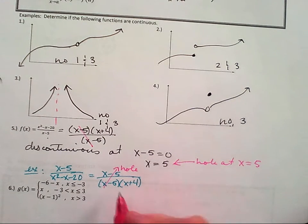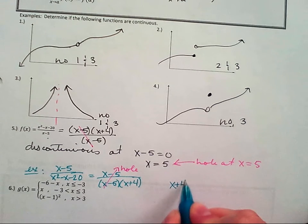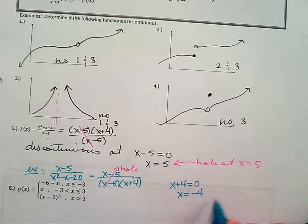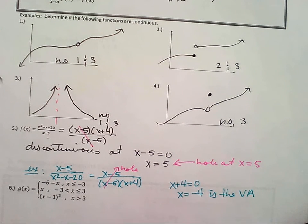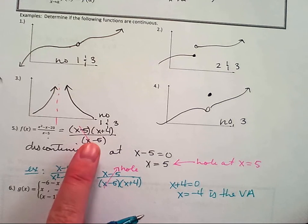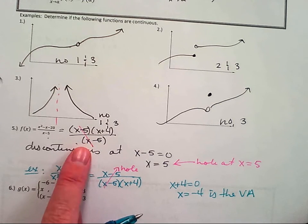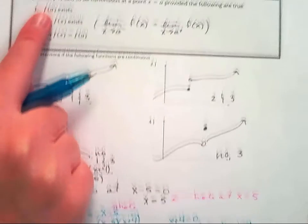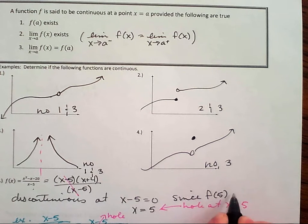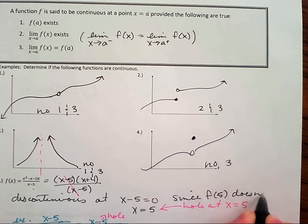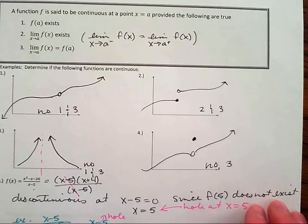But I still have this x plus four in the denominator. So x plus four equals zero, x equals negative four is the vertical asymptote. So we're just kind of going over different types of discontinuity. But this is discontinuous because at x equals five, f of five does not exist.